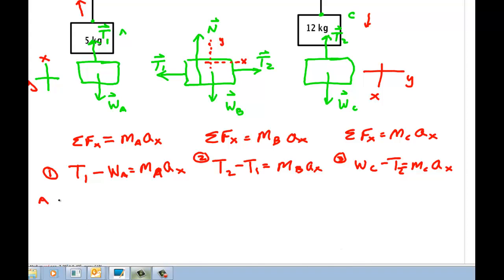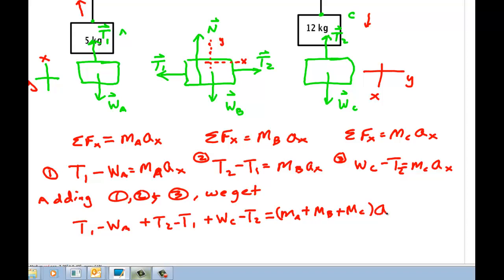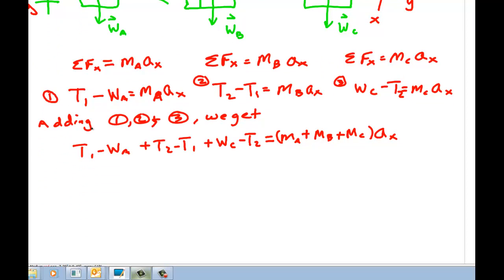Now we simply add the three equations together, adding one, two, and three. We get T_1 minus W_A plus T_2 minus T_1 plus W_C minus T_2, and this is equal to M_A plus M_B plus M_C times a_X. And what I've done, I've kind of skipped a step for time's sake, but this term, this term, and that term when added together have a common a_X, so I factor that common a_X out. Now let's see what we have out of this. Notice that the T_1 cancels, this minus T_1 cancels, this T_2 cancels this minus T_2.